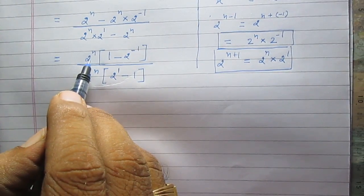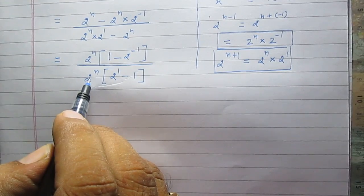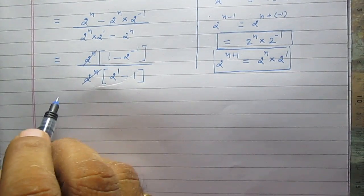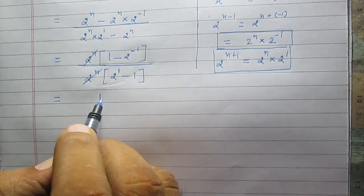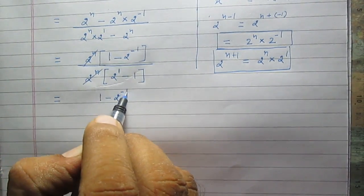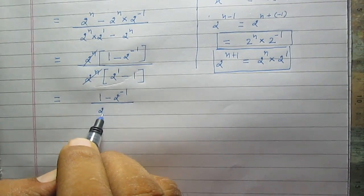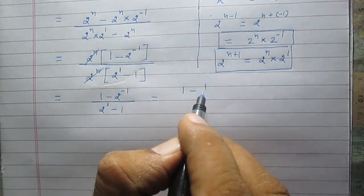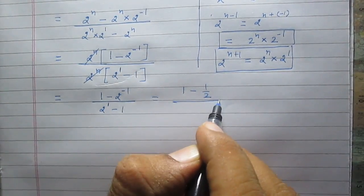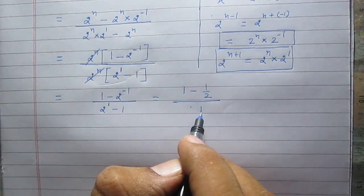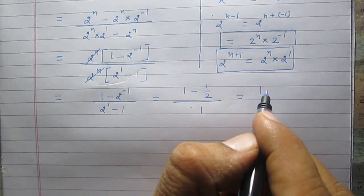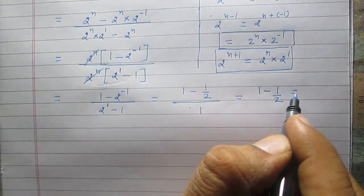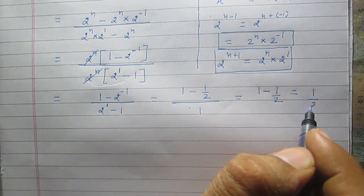2 raised to the power n in the numerator and 2 raised to the power n in the denominator can be reduced. So after cancellation, we will have 1 minus 2 raised to the power minus 1 over 2 raised to the power 1 minus 1 in the denominator. That is 1 minus 1 by 2, and in the denominator 2 minus 1 equals 1. So the final result is 1 by 2.